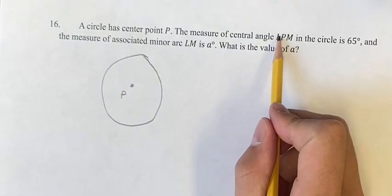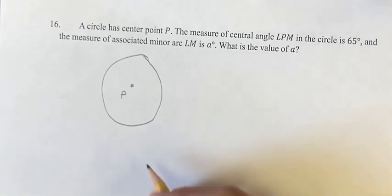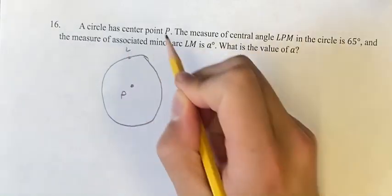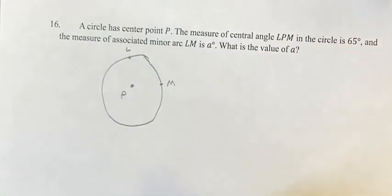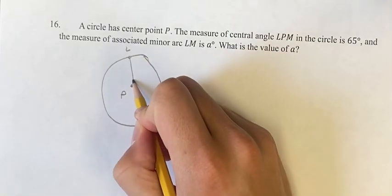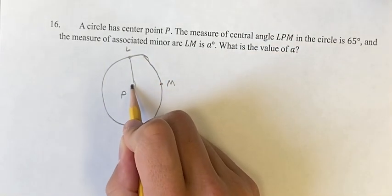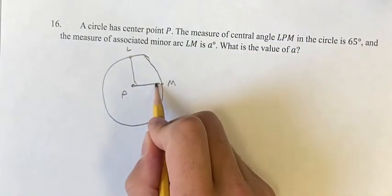And we're dealing with central angle LPM. We can draw that with L and M on the circumference. We have this central angle, meaning it goes to the center.